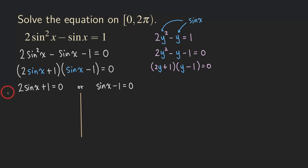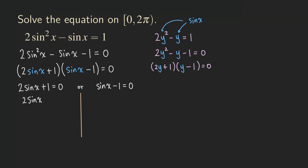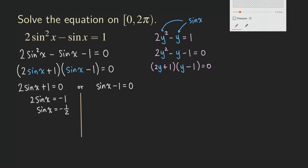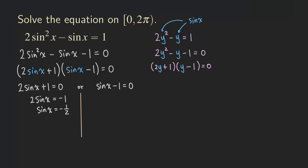This becomes a linear equation. To solve it, we isolate sine x by moving the 1 over and dividing by 2. We get 2 sine x equals negative 1, and then dividing by 2 gives sine x equals negative 1 over 2. Now we need to write down the reference angle, and we can construct a right triangle on the side to do the scratch work.